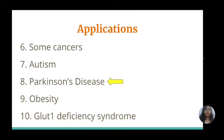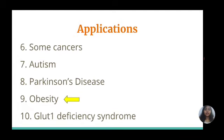Parkinson's disease, or PD, is a nervous system disorder characterized by low levels of the signaling molecule dopamine. The ketogenic diet has shown promise in improving symptoms of Parkinson's disease in both animal and human studies; however, high quality research is still needed in this area.